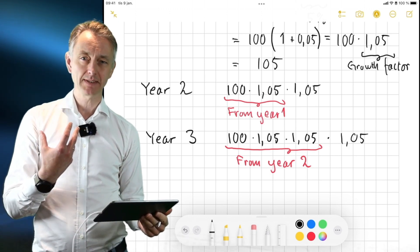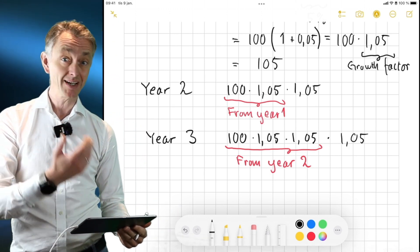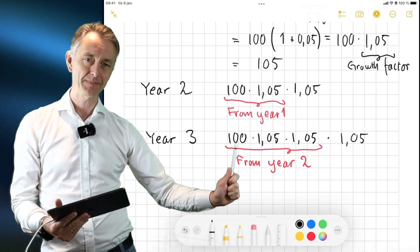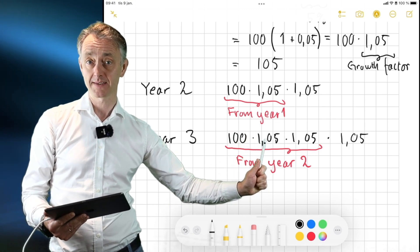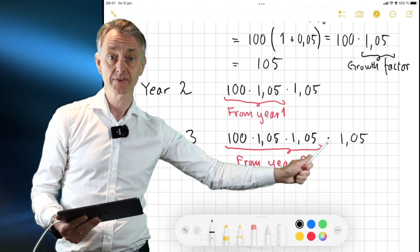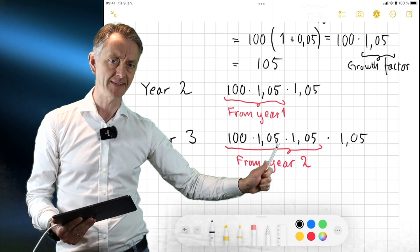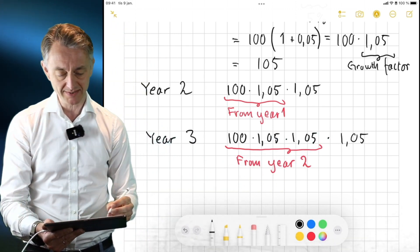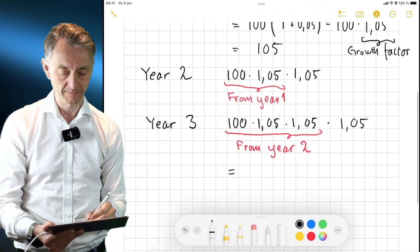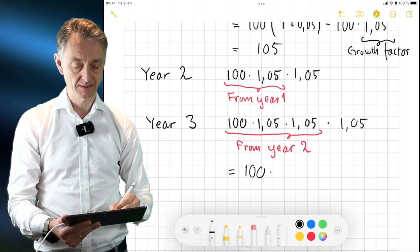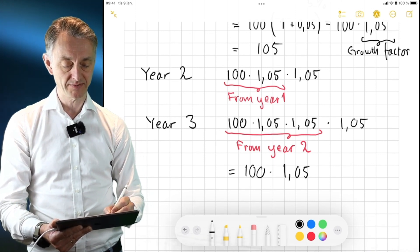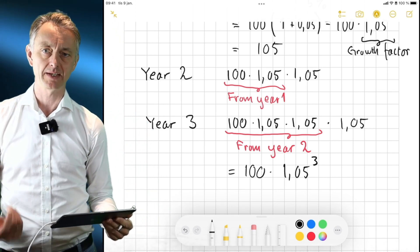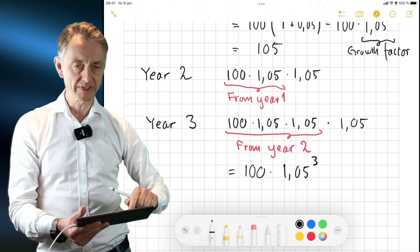Okay, so now that we know how my money grows, and now that we know from last lecture how powers work, we can see that here's the capital I started with. This is the growth factor, growth factor, growth factor. This looks like a base, right? Base, base, base. A factor that appears three times. So we can write this in a much more convenient way. 100 times 1.05 to the power of 3. Right, so we see the pattern developing here, right? And we can generalize this a bit more.